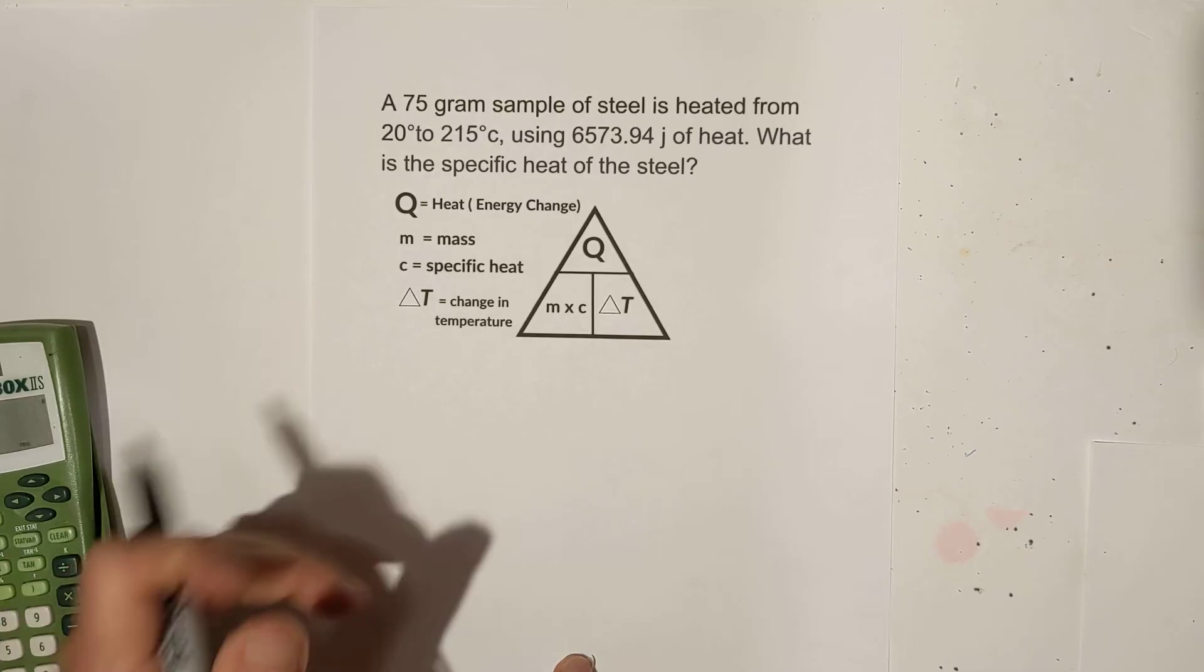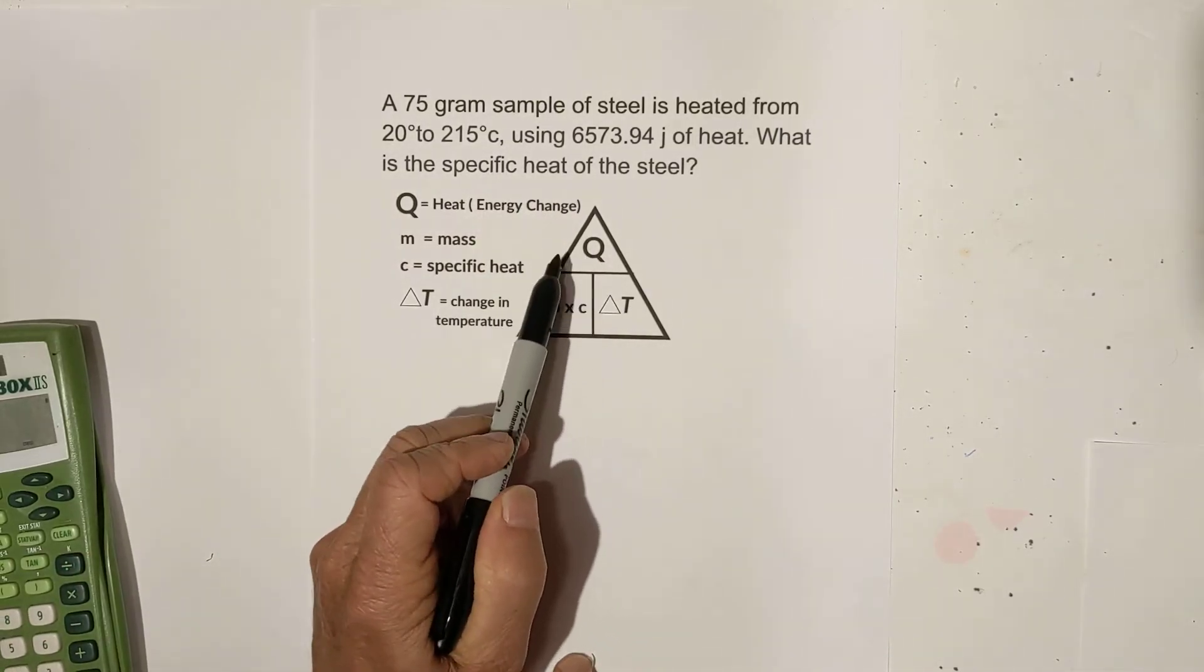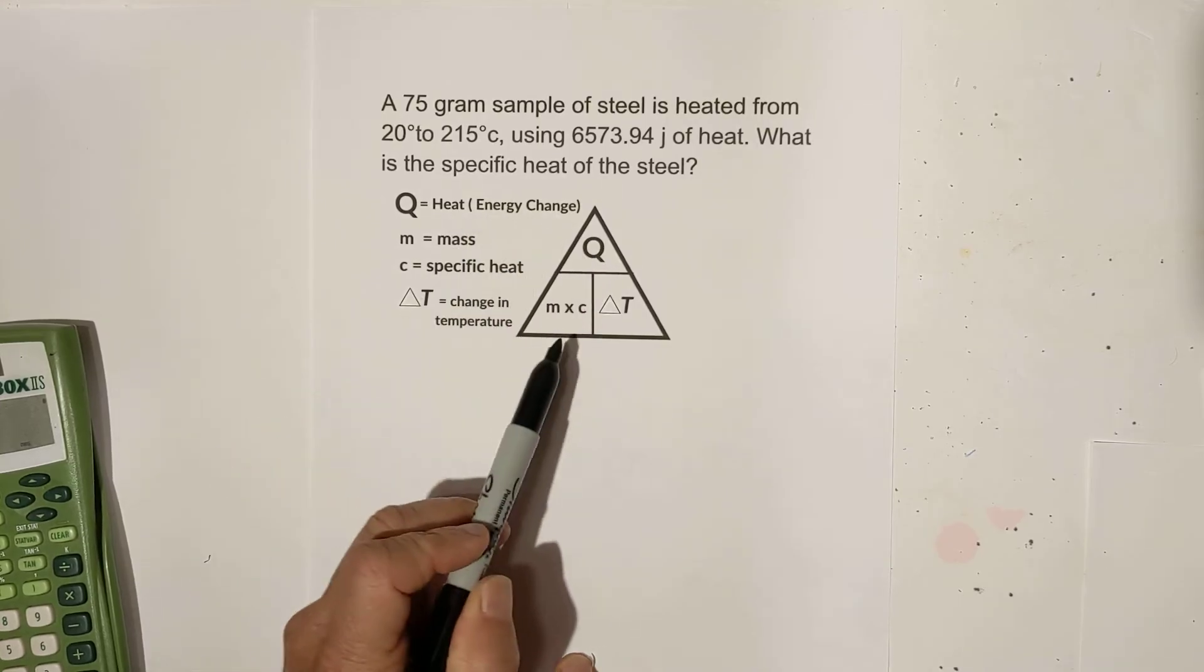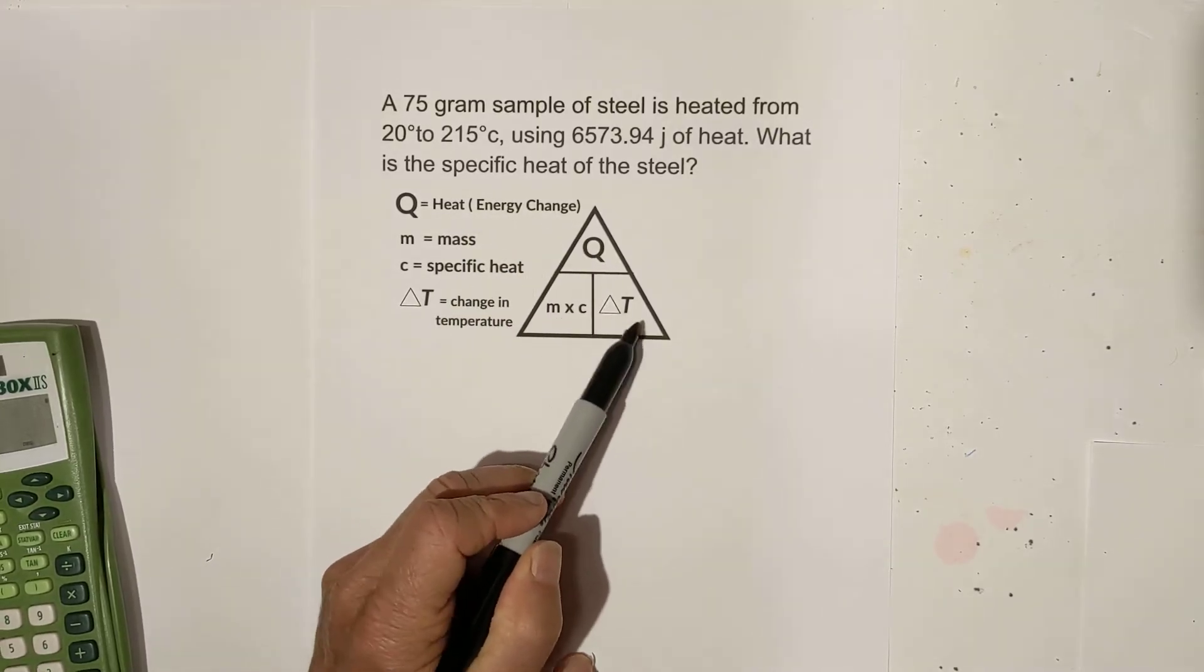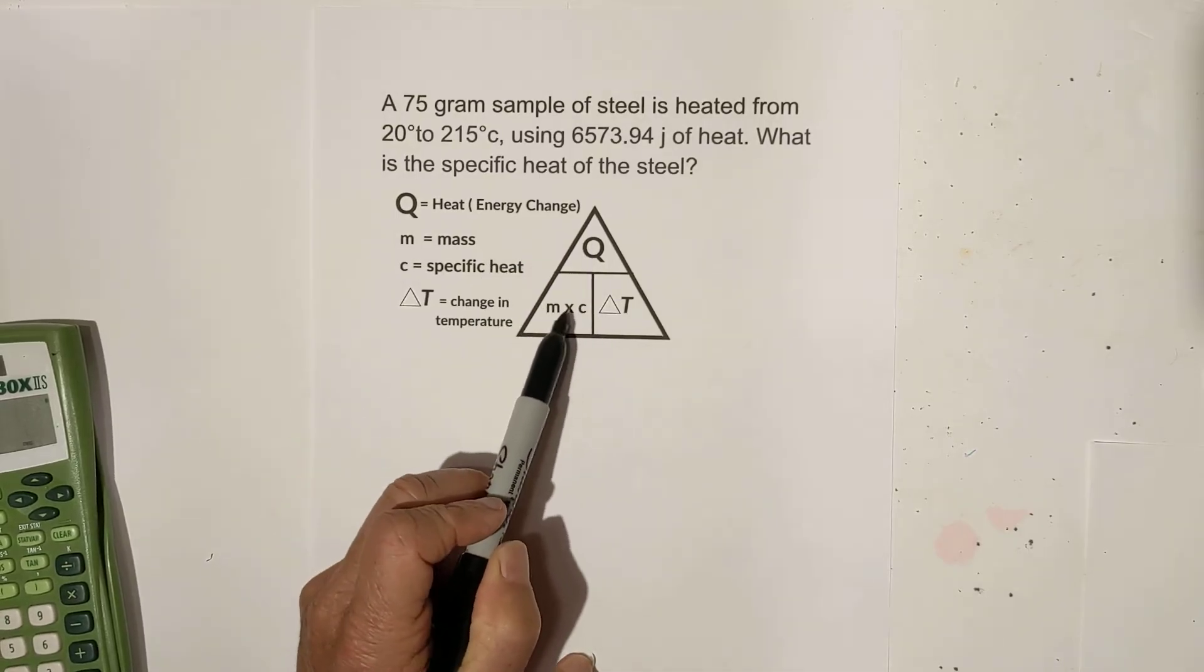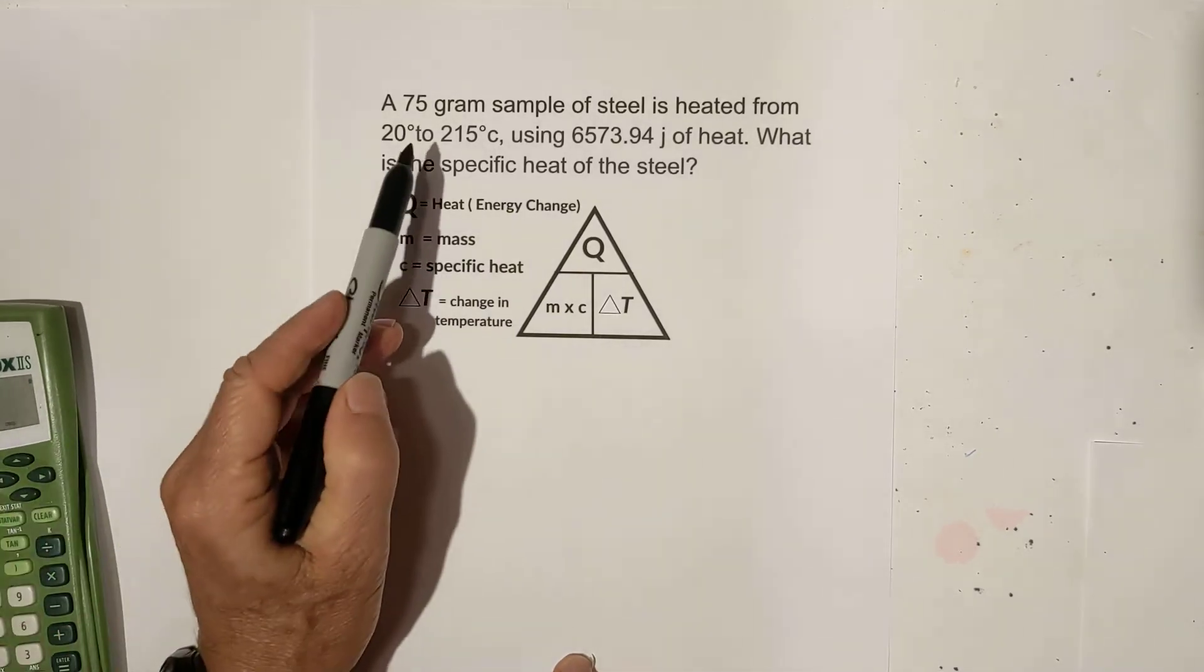Again a couple of advantages to the triangle is I think it's a little easier to visualize this. You just write Q on the top, then you go m times c change in temperature. And that way if you need what Q is you just know that you multiply all this across. Let's work our next one.